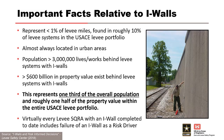Why do we make so much noise about I-walls? They represent less than 1% of levee miles, but about 10% of levee systems in the USACE portfolio have I-walls in them. They're almost always in urban areas, with about 3 million people living behind those systems as of 2018, and about $600 billion or more in property value — roughly a third of the overall population and about half the property value within the entire USACE levee portfolio. Virtually every levee SQRA done to date with an I-wall includes failure of an I-wall as one of the risk drivers.